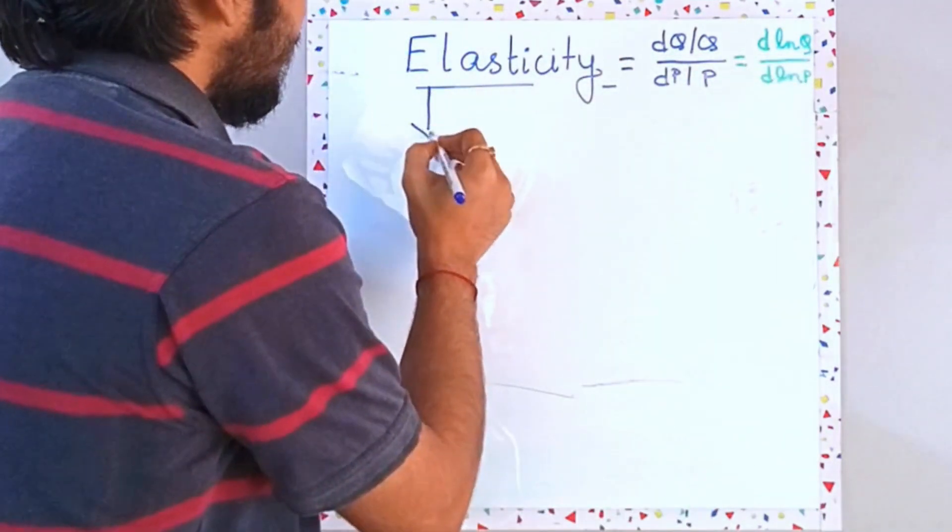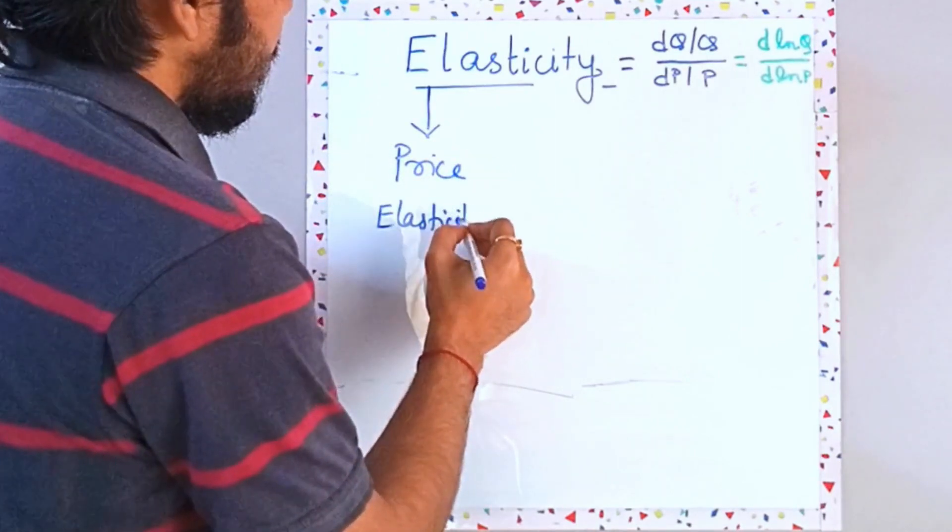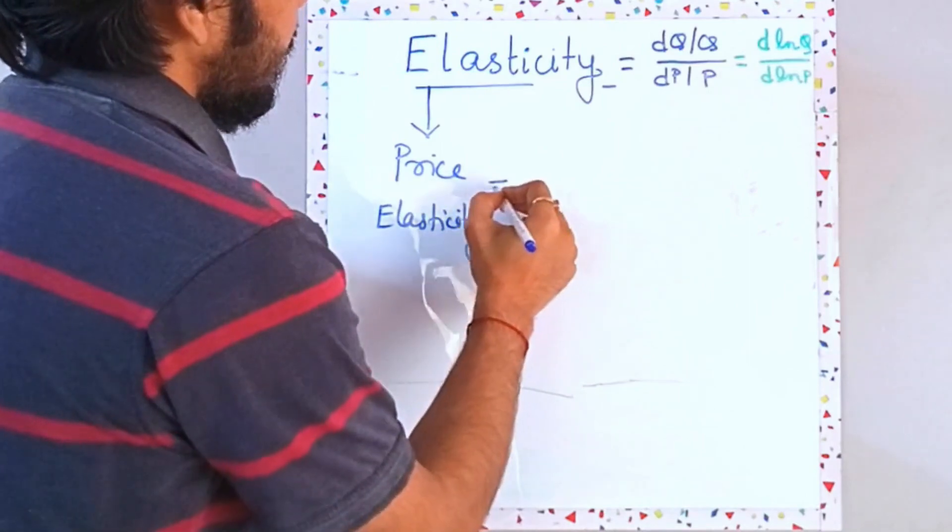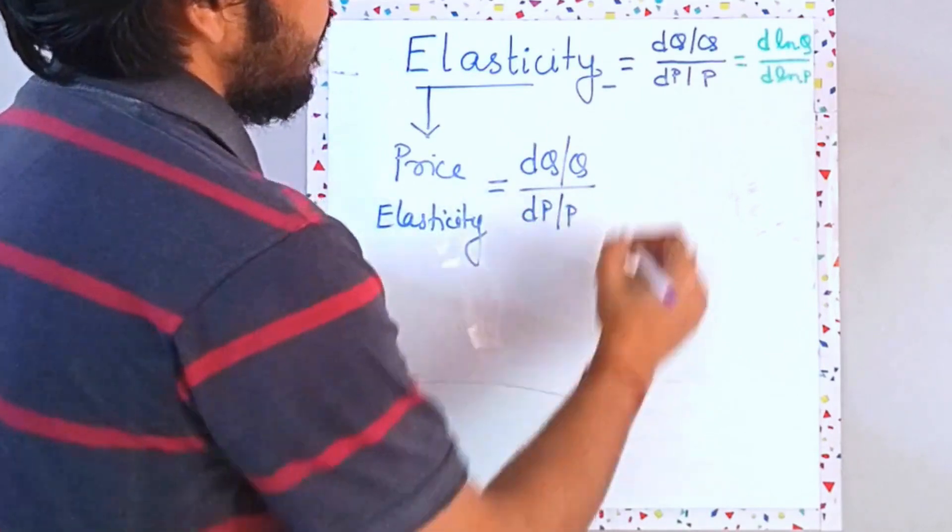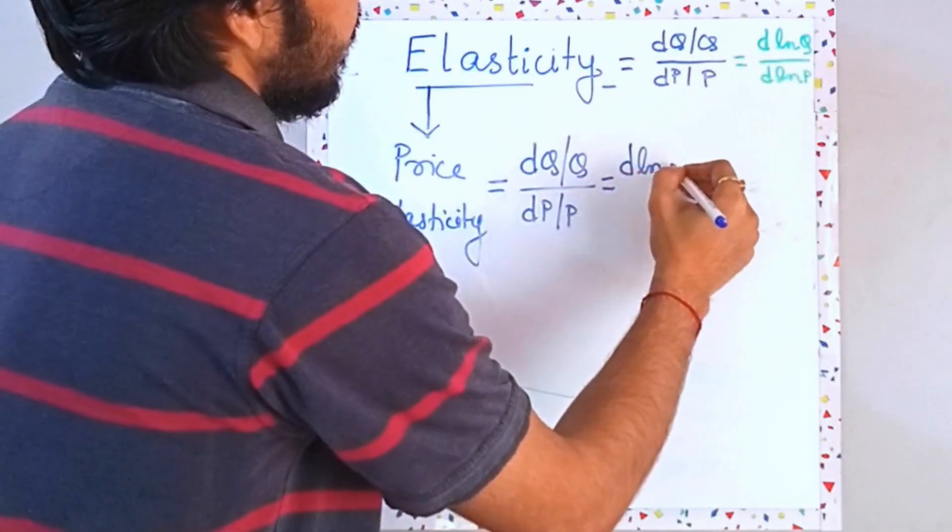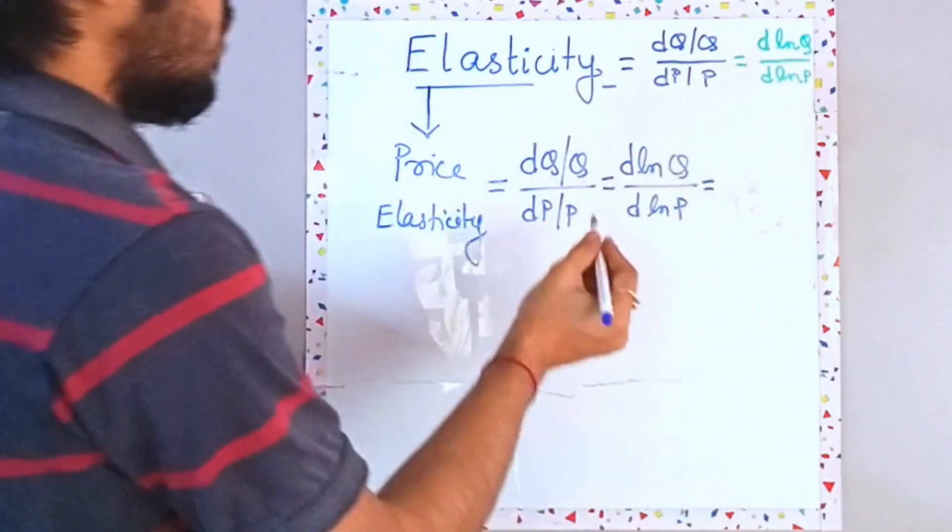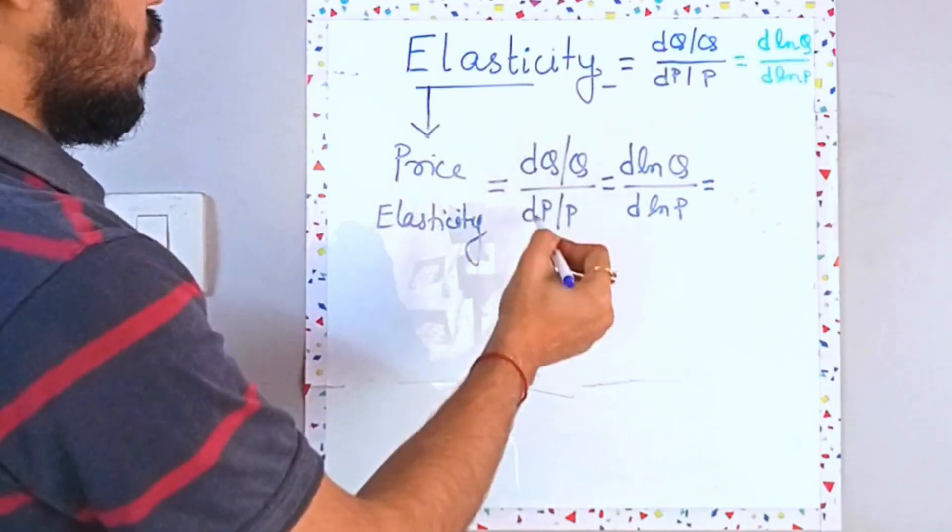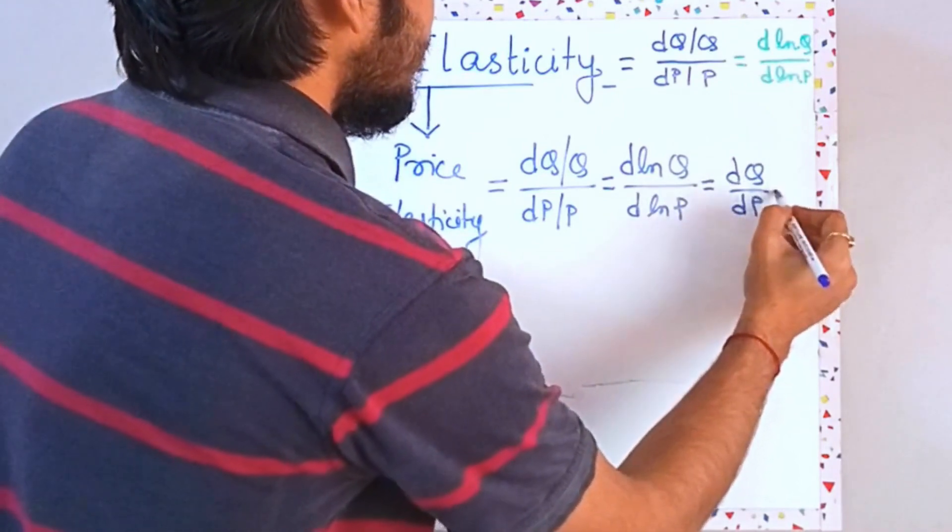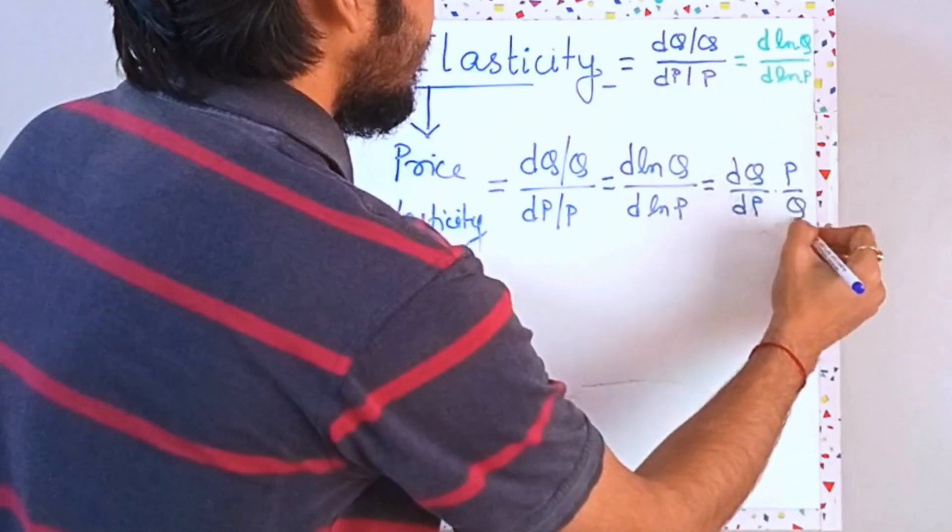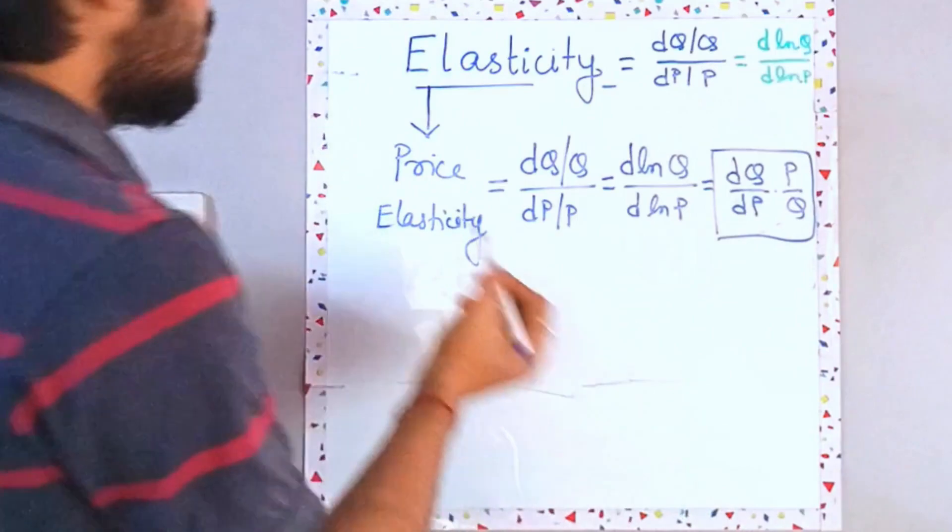So when we are talking about price elasticity, this is equal to DQ upon Q by DQ upon P which is equal to D ln Q by D ln P, which is also equal to this guy over here DQ upon DP. So I can write this thing as DQ upon DP into P by Q. So over here this thing is another way to write the price elasticity.